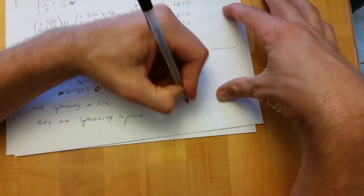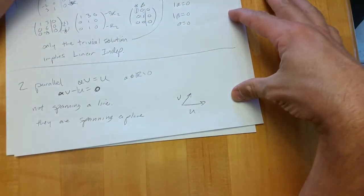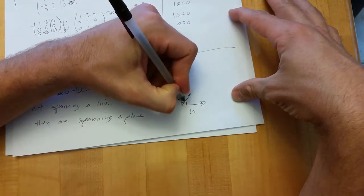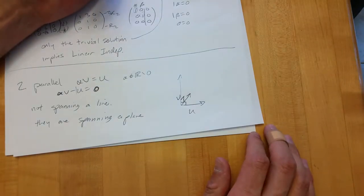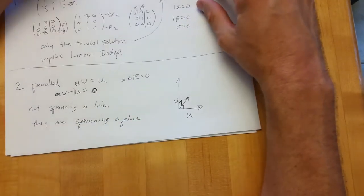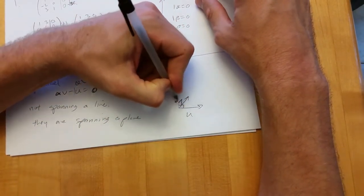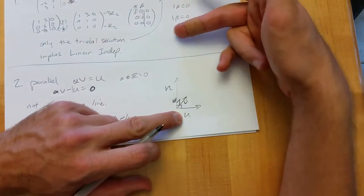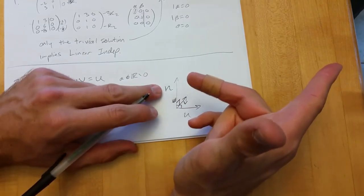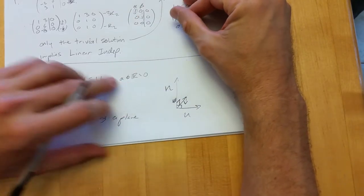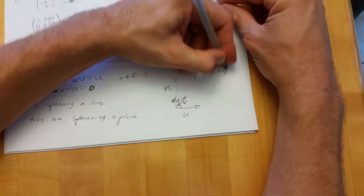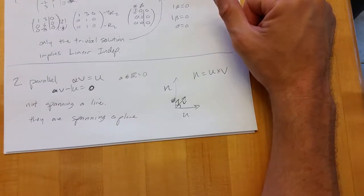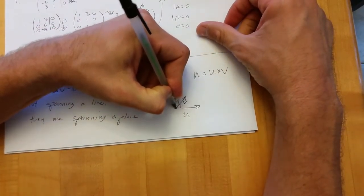To find the plane equation, we draw the picture: we have vectors u and v and we need to find a normal vector n perpendicular to both. That's where the cross product comes in — n equals u cross v. We also need a point on the plane, so we need to find point P-naught. There is no explicit point given, but the plane is the span of the two vectors — all linear combinations — so any linear combination will give us a point on the plane.